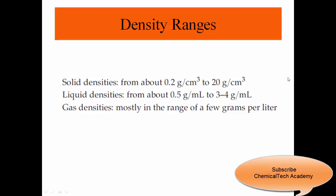These are some density ranges for different phases. For solids, densities usually range between 0.2 to 20 grams per cubic centimeter. For liquids, density ranges from 0.5 to 3 or 4 grams per cubic centimeter. Note that cubic centimeters and milliliters are equivalent — one liter equals one thousand milliliters and also one thousand cubic centimeters. Gas densities have a very wide range.